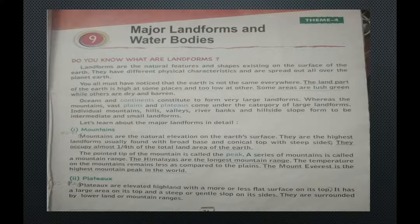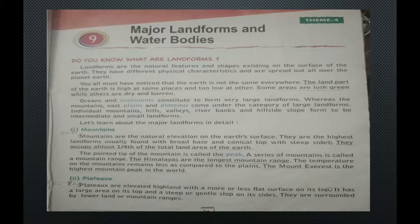Do you know what are landforms? Landforms are the natural features and shapes existing on the surface of the earth. They have different physical characteristics and are spread out all over the planet earth. The land part of the earth is high at some places and low at others. Some areas are lush green while others are dry and barren. Different oceans and continents constitute to form very large landforms.